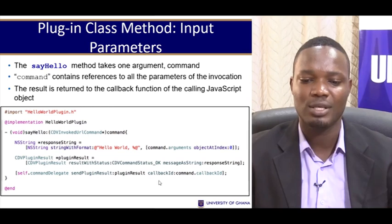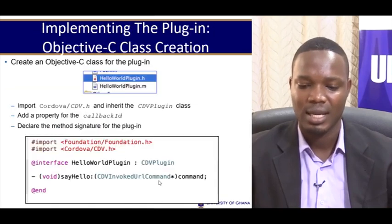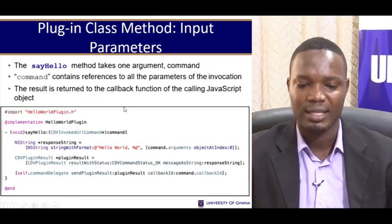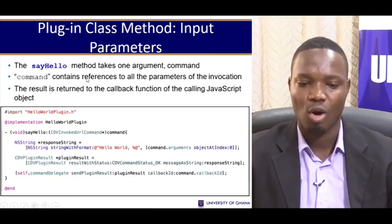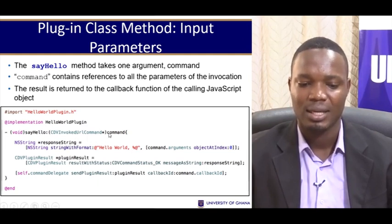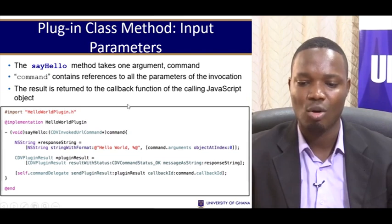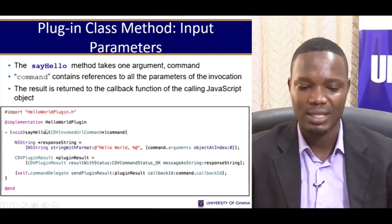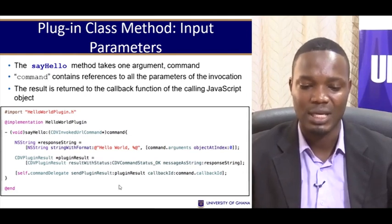The say hello method takes one argument. The command contains references to all the parameters of the invocation — here we have the CDVInvokeURLCommand — so that is containing all references to the parameters of the invocation. Then the result is returned to the callback function of the calling JavaScript object.